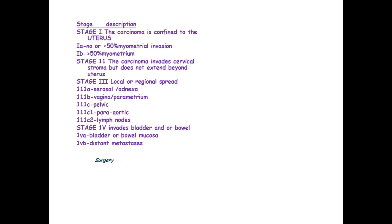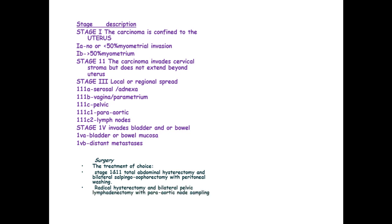For treatment, surgery is the main treatment of choice. In stage 1 and 2, you conduct a total abdominal hysterectomy and bilateral salpingo-oophorectomy with peritoneal washing, radical hysterectomy and bilateral pelvic lymphadenectomy with paraaortic node sampling. Radiotherapy as an adjuvant for stage 1 and chemotherapy using high dose for distant metastasis.